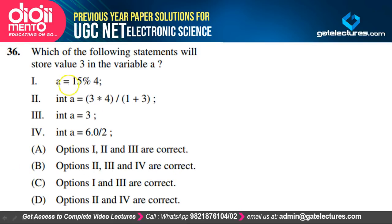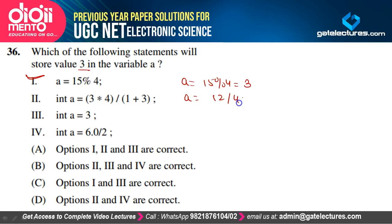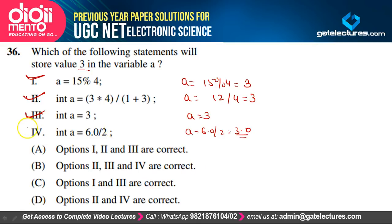Which statements store the value 3 in variable A? (1) A = 15%4 → remainder 3, correct; (2) int A = 3*4/1+3... wait, 3*4=12, 12/4=3 — wait, written as 3*4/1+3, that is 12/1+3=15, but the intent is int A = (3*4)/(1+3) = 12/4 = 3, correct; (3) int A = 3 → correct; (4) 6.0/2 returns 3.0 not integer 3 — incorrect. Statements 1, 2, and 3 are correct. Option A is correct.